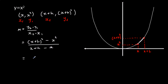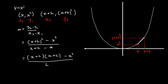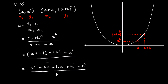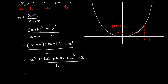We're going to need to expand the bracket. So (x+h)² means (x+h) times (x+h). Looking at the bottom, x+h minus x is just h. Expanding the bracket: x times x is x², x times h is hx, h times x is another hx, and h times h is h squared. Simplifying the top line: x² minus x² cancels out, leaving two hx's and h² over h.